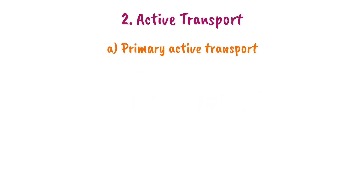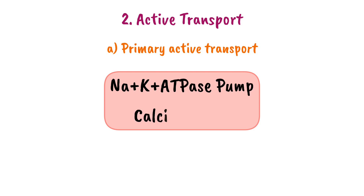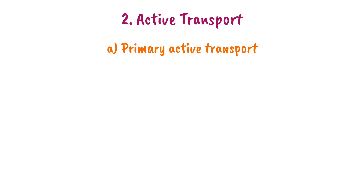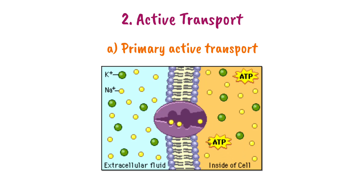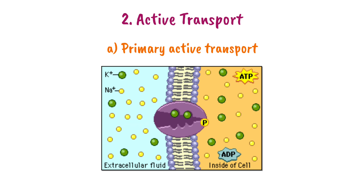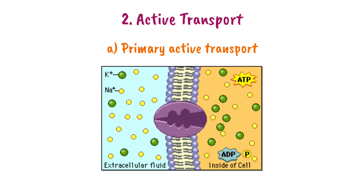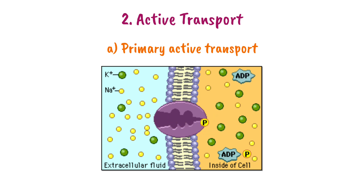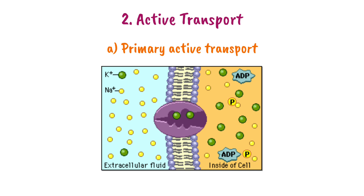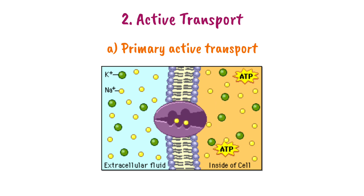Examples of primary active transport include the sodium-potassium ATPase pump and the calcium pump. The sodium-potassium pump in the cell membrane is a key example of primary active transport, and the hydrogen-potassium pump is also included.